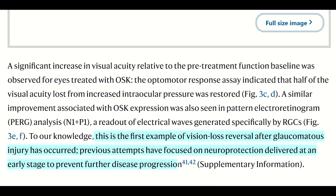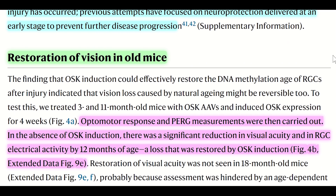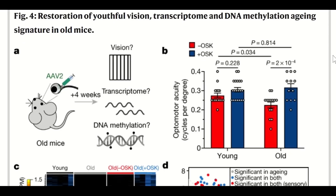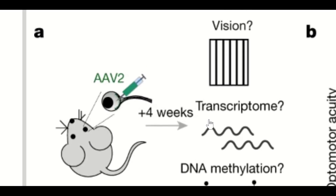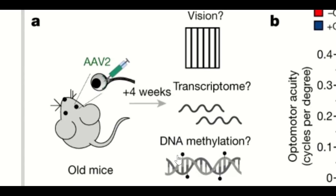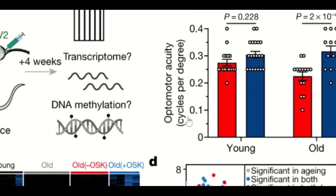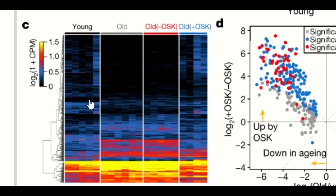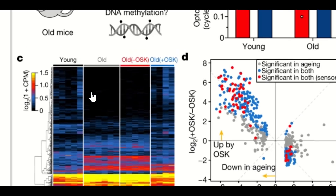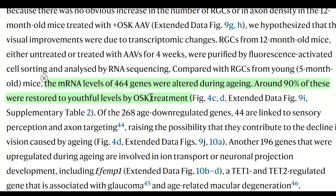So far they'd only used quite young mice. They were then interested in seeing whether OSK induction could restore the DNA methylation age of older mice, in addition to restoring youthful vision and a younger transcriptome signature. To test this, they treated three- and eleven-month-old mice with the three genes and induced expression for four weeks, then analysed the optomotor response and transcriptomics. As you can see in this figure, older mice induced to express the three genes showed an improvement in their optomotor activity. The heat maps of the RNA sequencing results showed that the gene expression profile of old mice treated with OSK more closely matched the young expression profile — around 464 genes were altered during ageing, and around 90% of these were restored to youthful levels by the OSK treatment.